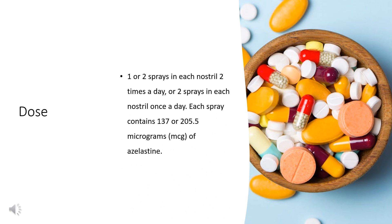For nasal dosage form (Astelin spray), for treatment of seasonal allergic rhinitis: adults and children 12 years of age and older, 1 or 2 sprays in each nostril 2 times a day, or 2 sprays in each nostril once a day; each spray contains 137 or 205.5 micrograms of azelastine. Children 6 to 11 years of age, 1 spray in each nostril 2 times a day; each spray contains 137 or 205.5 micrograms of azelastine. Children 2 to 5 years of age, 1 spray in each nostril 2 times a day; each spray contains 137 micrograms of azelastine.